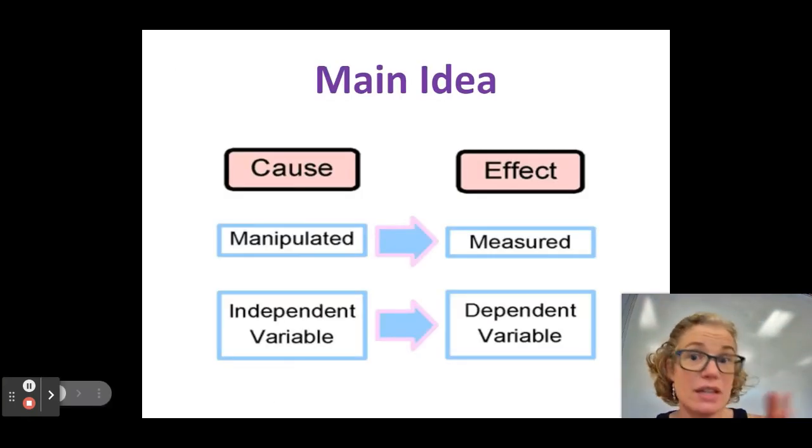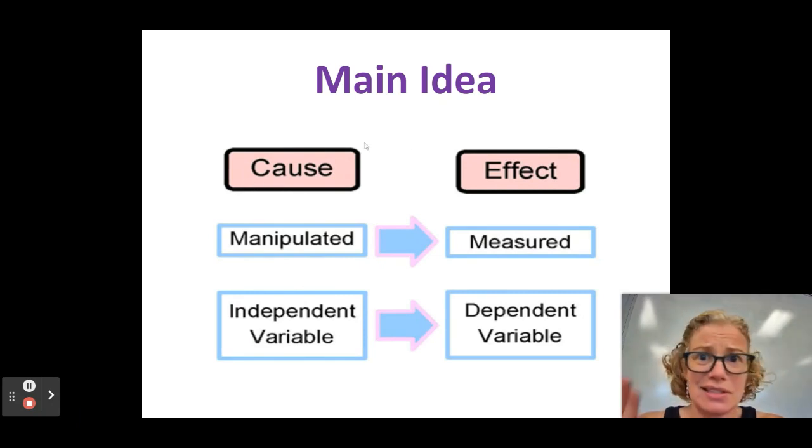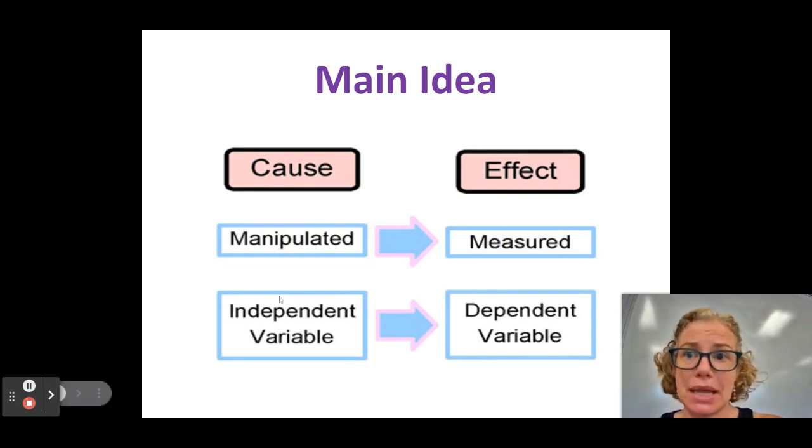So sometimes kids like this graphic as a way of helping to remember independent and dependent variables. So the independent variable is what I the scientist am changing. So it starts with I. It's the cause. It's the thing that we're using as the cause to see if there is an effect. You could also think about it as this is what's being manipulated or changed. And then this is what I'm measuring. It's the data that I'm collecting. It depended on what I changed. So a whole bunch of different memory tools. Hopefully you'll find one that works for you. You could even brainstorm some with your classmates about how do we want to keep these two words straight because they're important to keep separate.